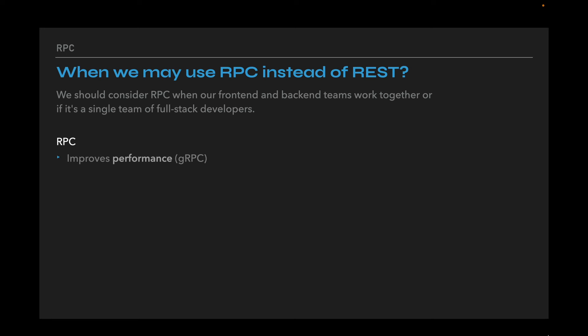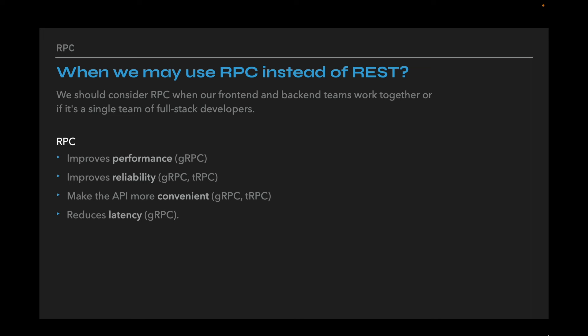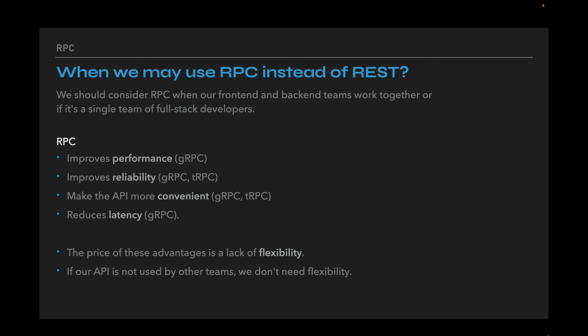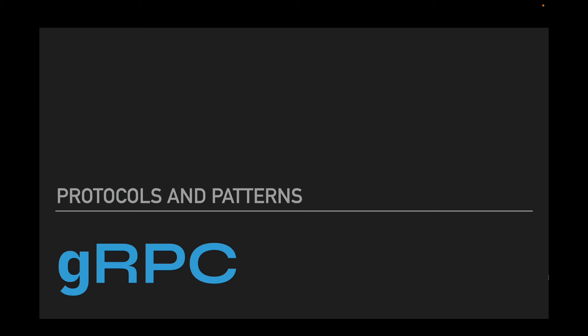Let's look at the advantages and disadvantages of RPC compared to REST. It improves performance (in the case of gRPC), improves reliability for both gRPC and tRPC, makes the API more convenient, and reduces latency with gRPC. The price of these advantages is a lack of flexibility. However, if our API is not used by other teams, we don't need this flexibility. Lack of flexibility makes RPC a poor choice for public APIs.